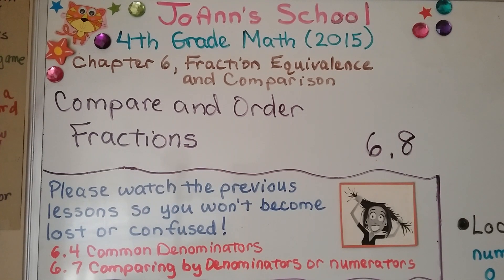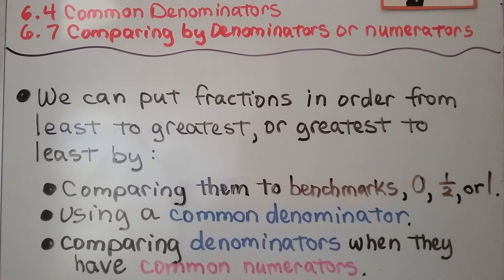For this lesson, it's really important that you saw lessons 6.4 and 6.7 because they led up to this lesson, and they're linked in the description. This is 6.8 Compare and Order Fractions. We can put fractions in order from least to greatest or greatest to least by comparing them to benchmarks like 0, half, or 1, using a common denominator, or comparing denominators when they have common numerators.